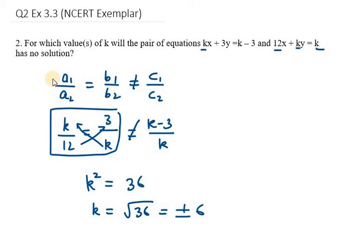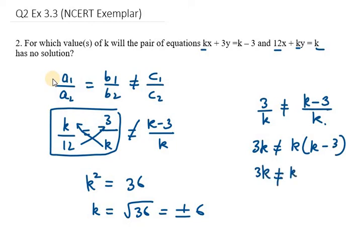Now using the last two terms, we will get 3 over k is not equal to k minus 3 over k. You need to take cross multiplication again. So it will be 3k here, and on the right hand side we have k into k minus 3. So the value is 3k is not equal to k squared minus 3k.